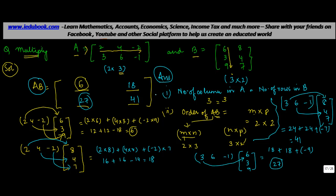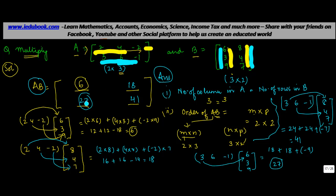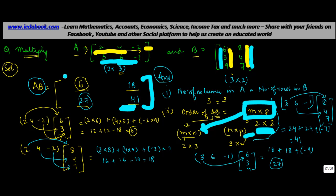So that's how you do matrix multiplication: first row times first column, first row times second column, second row times first column, second row times second column — and you place each result in the corresponding position. The order of the resulting matrix is M×P, where M is the number of rows in the first matrix and P is the number of columns in the second. This gives us a 2×2 matrix with four elements.